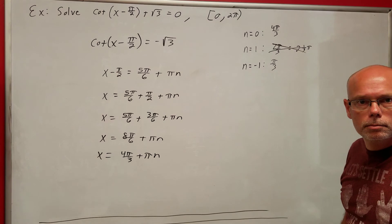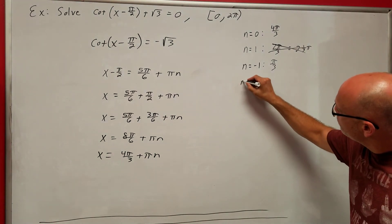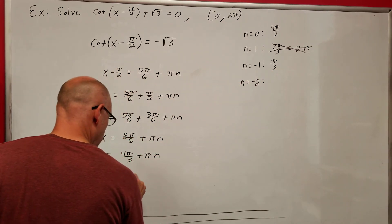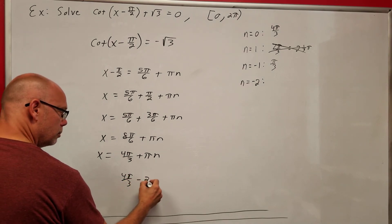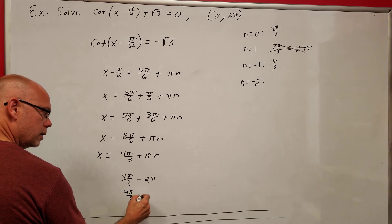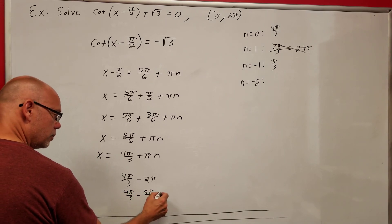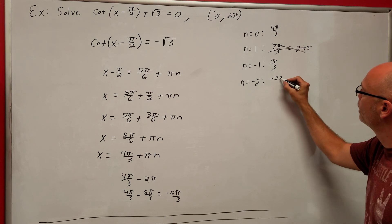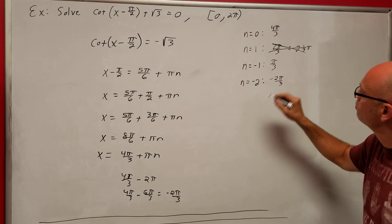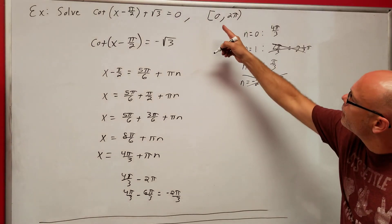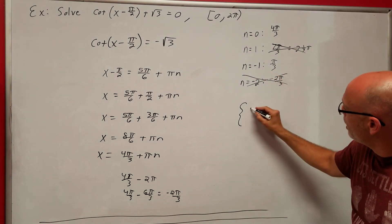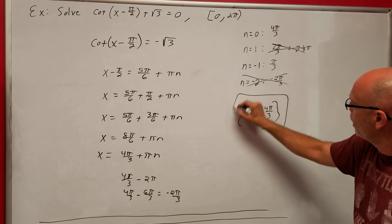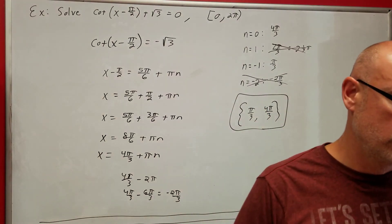When N = −2: x = 4π/3 − 2π = 4π/3 − 6π/3 = −2π/3 — that's negative, so I can't use it. My solution set on [0, 2π] is {π/3, 4π/3}. Try doing that problem by yourself — it's a little tricky, but make sure you get it.